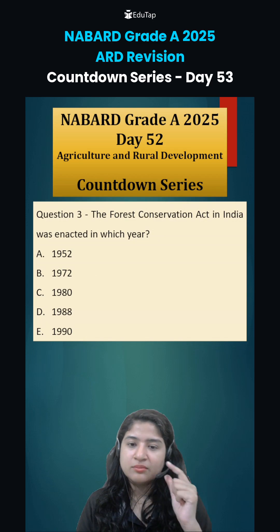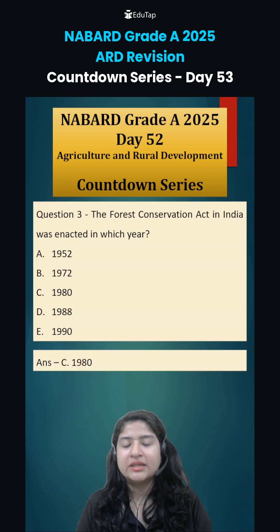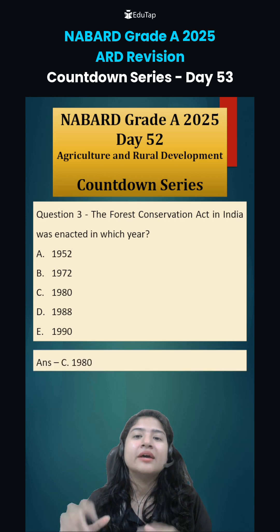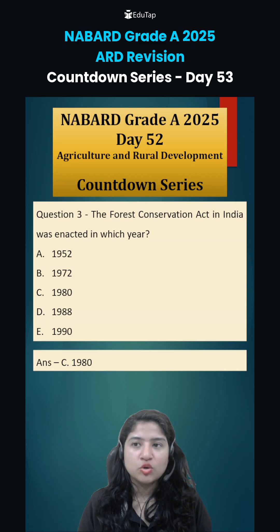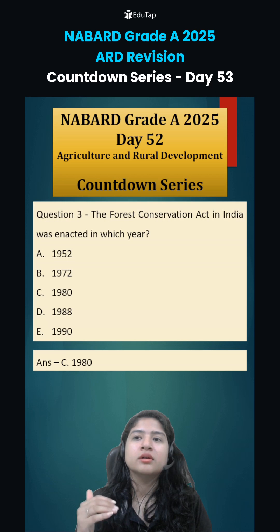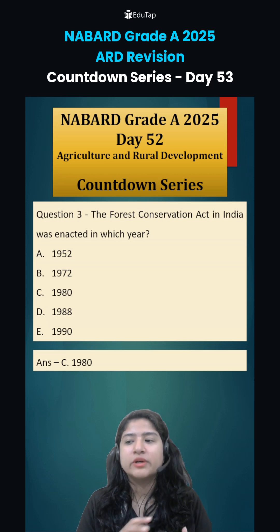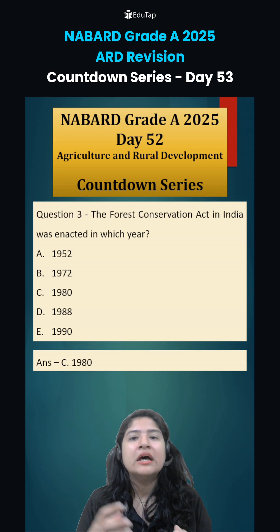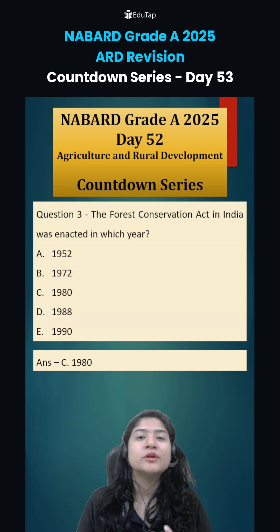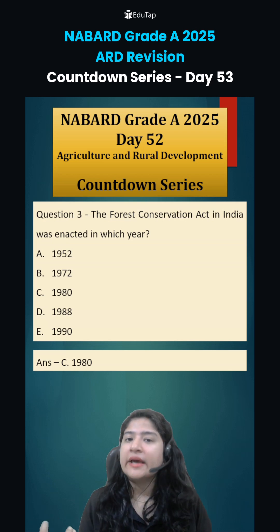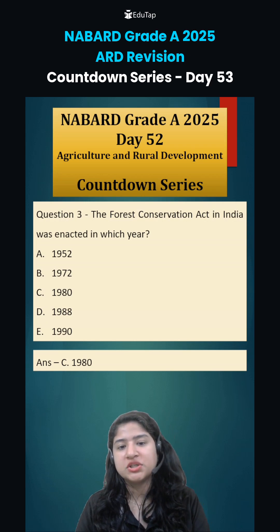Coming to question number three: the Forest Conservation Act in India was enacted in the year 1980. It was done so that afforestation can be promoted, deforestation can be controlled, and whatever activities happen in the forest require permission from the government, so that exploitation of the forest does not happen.